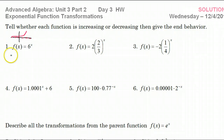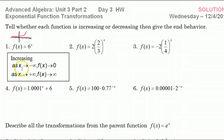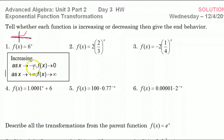This is increasing. As far as the end behavior: on the left, the graph is approaching the asymptote, which is zero. On the right, the graph is rising forever, so that's approaching infinity. So as x approaches negative infinity, f of x approaches zero. As x approaches positive infinity, f of x approaches infinity.